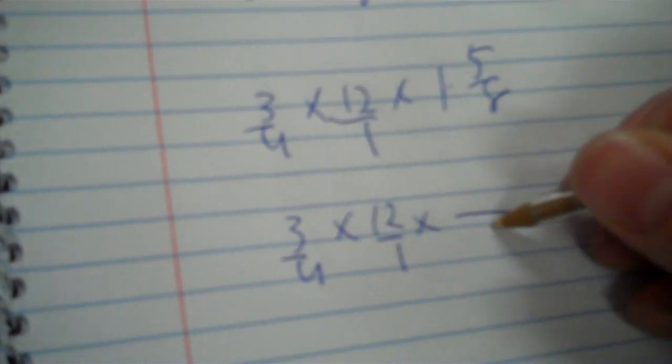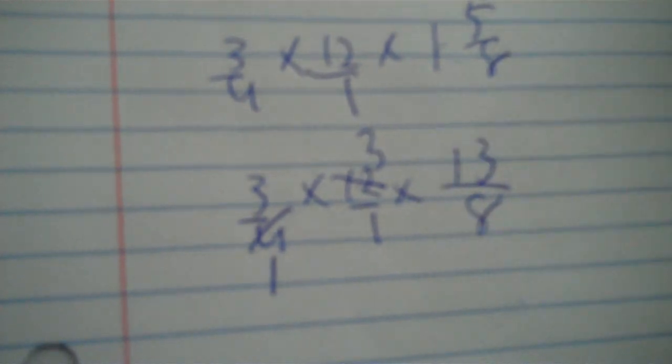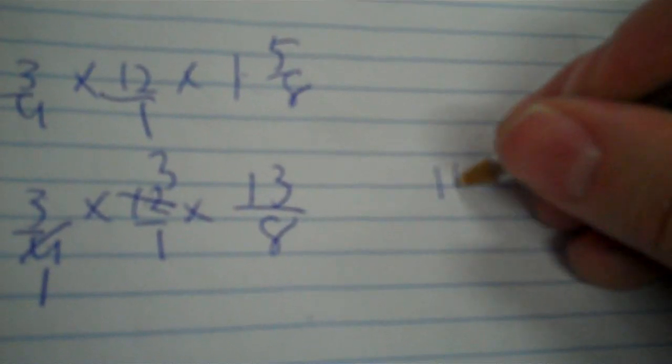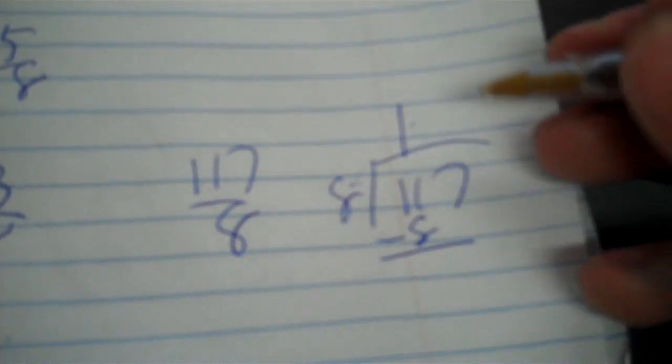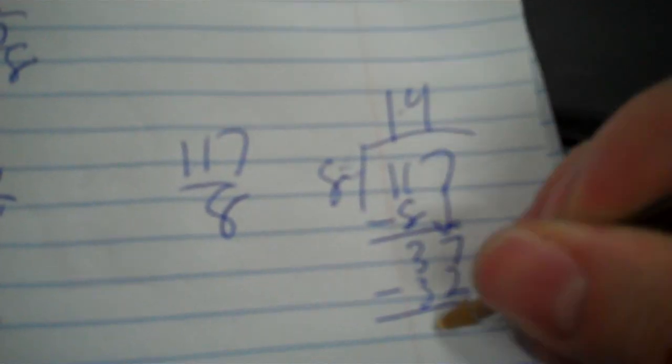3 fourths times 12 times 1 and 5 eighths. So, 12 can go over 1. That 1 can't be in the front. So, it's 3 fourths times 12 over 1 times 8 plus 5 is 13 over 8. 12 and 4 have a common factor. Because they're both in the fourth row, I could divide them both by 4. So, that would become a 1. That would become a 3. And then, 13 is prime. So, 3 times 3 times 13, 117 divided by 8. 8 goes into 11 once. 8 times 1 is 8. That's not your remainder because you still have a 7. It goes into 37 four times. 8 times 4 is 32. 5. So, the remainder is 5. So, it would be 14 and 5 eighths.